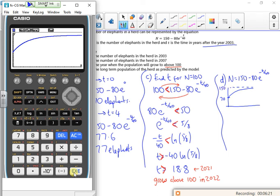Now the idea is that you know, the e graph, so as t gets massive, tends towards infinity, e to the minus t over 40 will tend towards 0. So as that tends towards 0, minus 80 times by it, will also tend towards 0. And that'll leave me just the 150 left over.